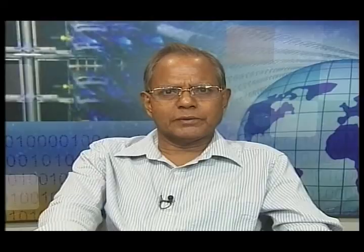For detection of boric acid in maida, atta, etc., take a small quantity of sample in a test tube, add some water and shake well, add a few drops of hydrochloric acid, and dip a turmeric acid strip. Turmeric strips can be prepared by dipping filter paper in turmeric solution. If the strip turns red, it indicates presence of boric acid in the sample of maida or atta.